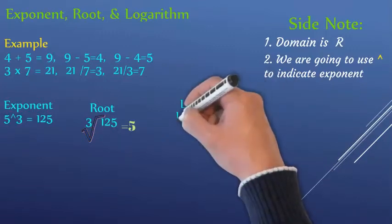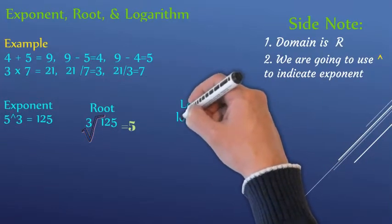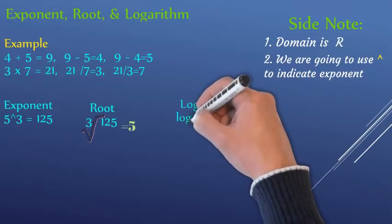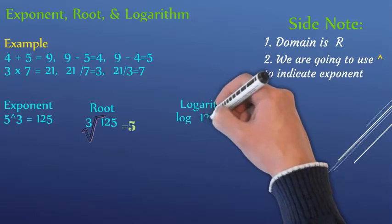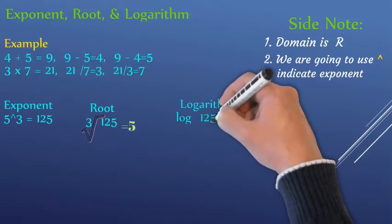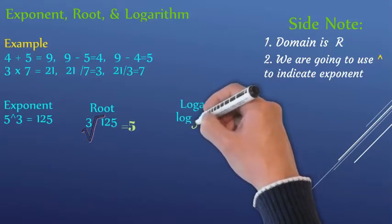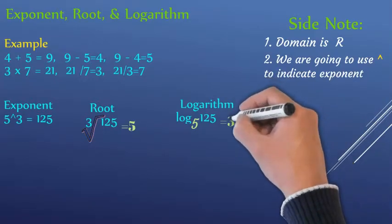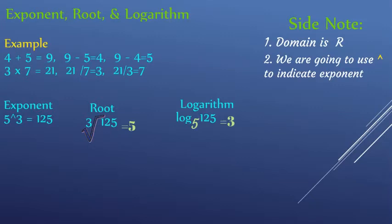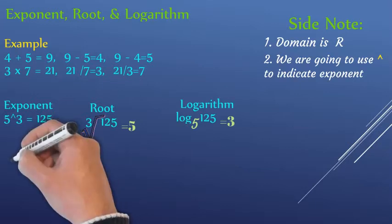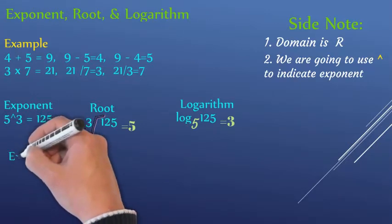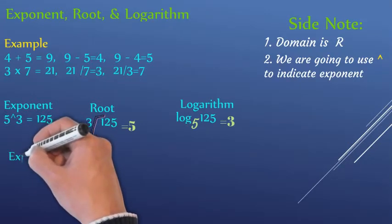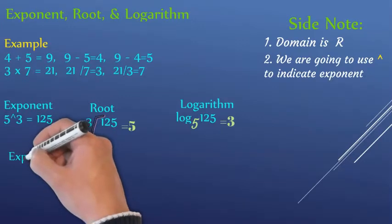And if they ask you the logarithm — in this case they are asking you for the log of 125 to the base five, that's three. They are asking you: what was the exponent used on five to get 125? That's what logarithm is.